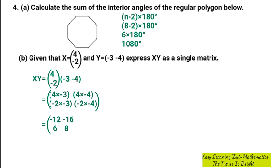Okay. Now once we've done this, that means we have gotten the final answer. So to express XY as a single matrix will give us negative 12, negative 16, 6, 8. Okay, that's the product of those two matrices. Okay, now let's go to the next question.